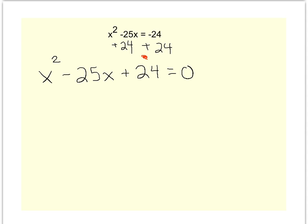So we'll start by thinking about what multiplies to give us a positive 24 and adds to give us a negative 25. Well, factors of 24 are 24 and 1, 12 and 2, 8 and 3, 6 and 4.